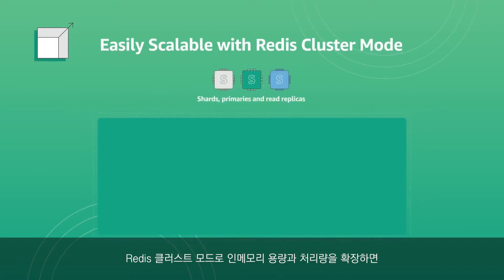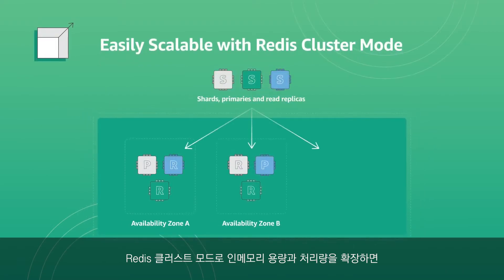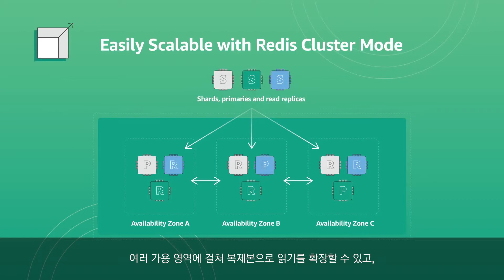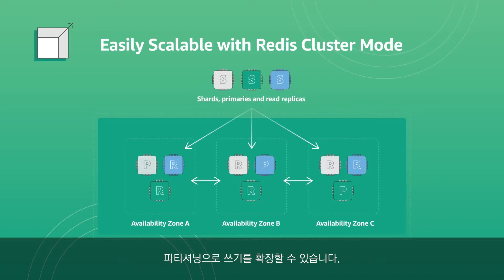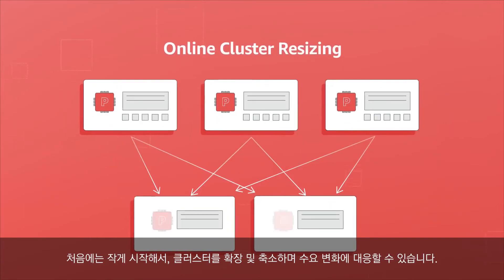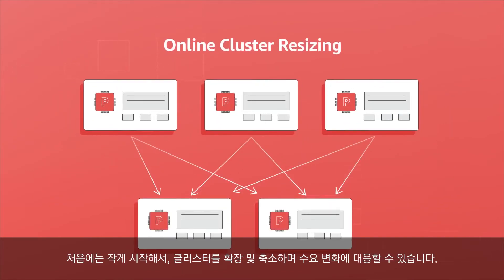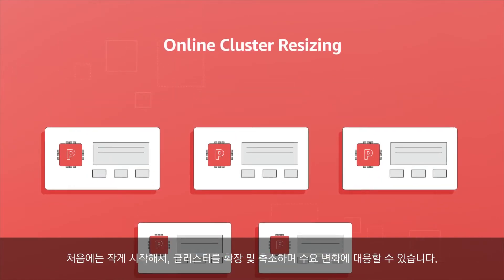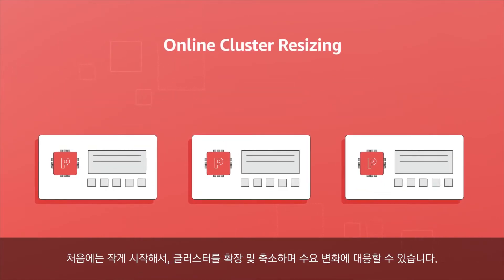Scale in-memory capacity and throughput with Redis cluster mode. Scale reads with replicas across availability zones. Scale writes with partitioning. You can start small and scale out or scale in to meet fluctuating demands.